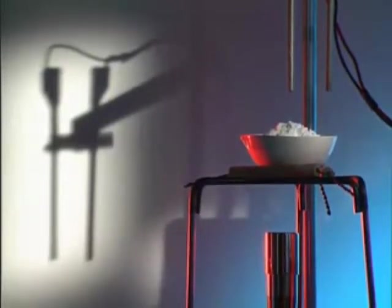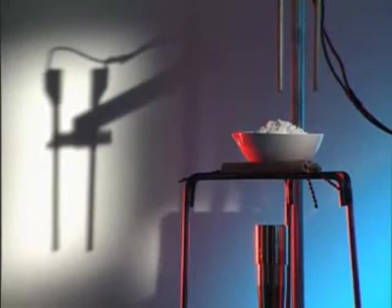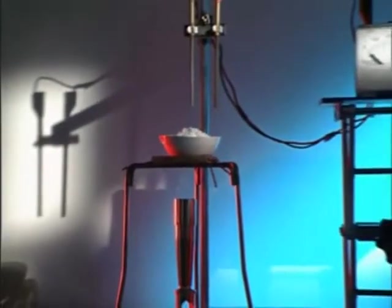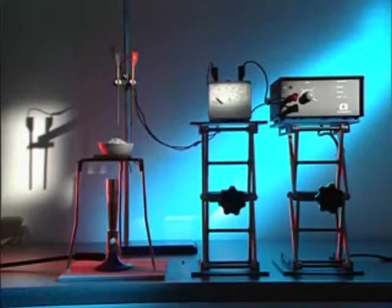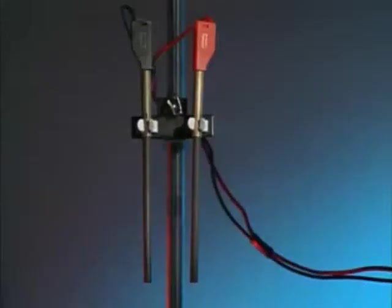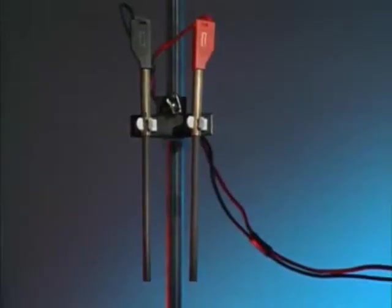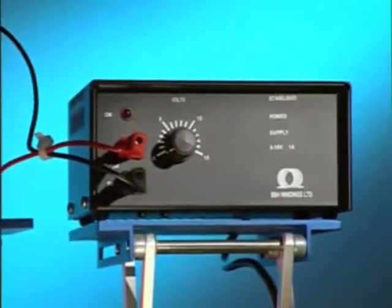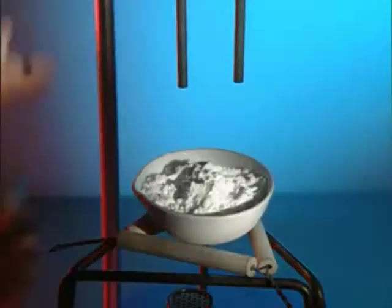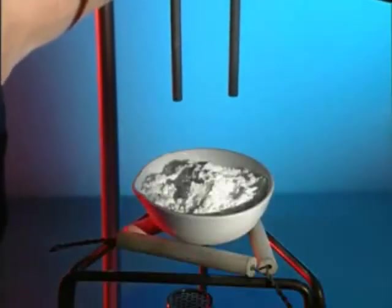You can split a compound using electricity. The idea is to pass an electric current through it, a process known as electrolysis. A circuit is set up using two carbon electrodes, an ammeter and a power supply.